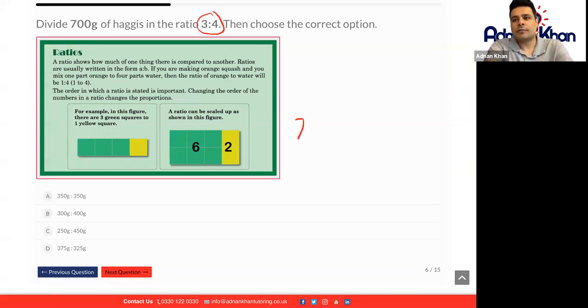So 700 divided by the total ratio multiplied by the first ratio which is 3, and then 700 divided by 7 which is the total ratio and multiplied by 4 which is the second part of our ratio.